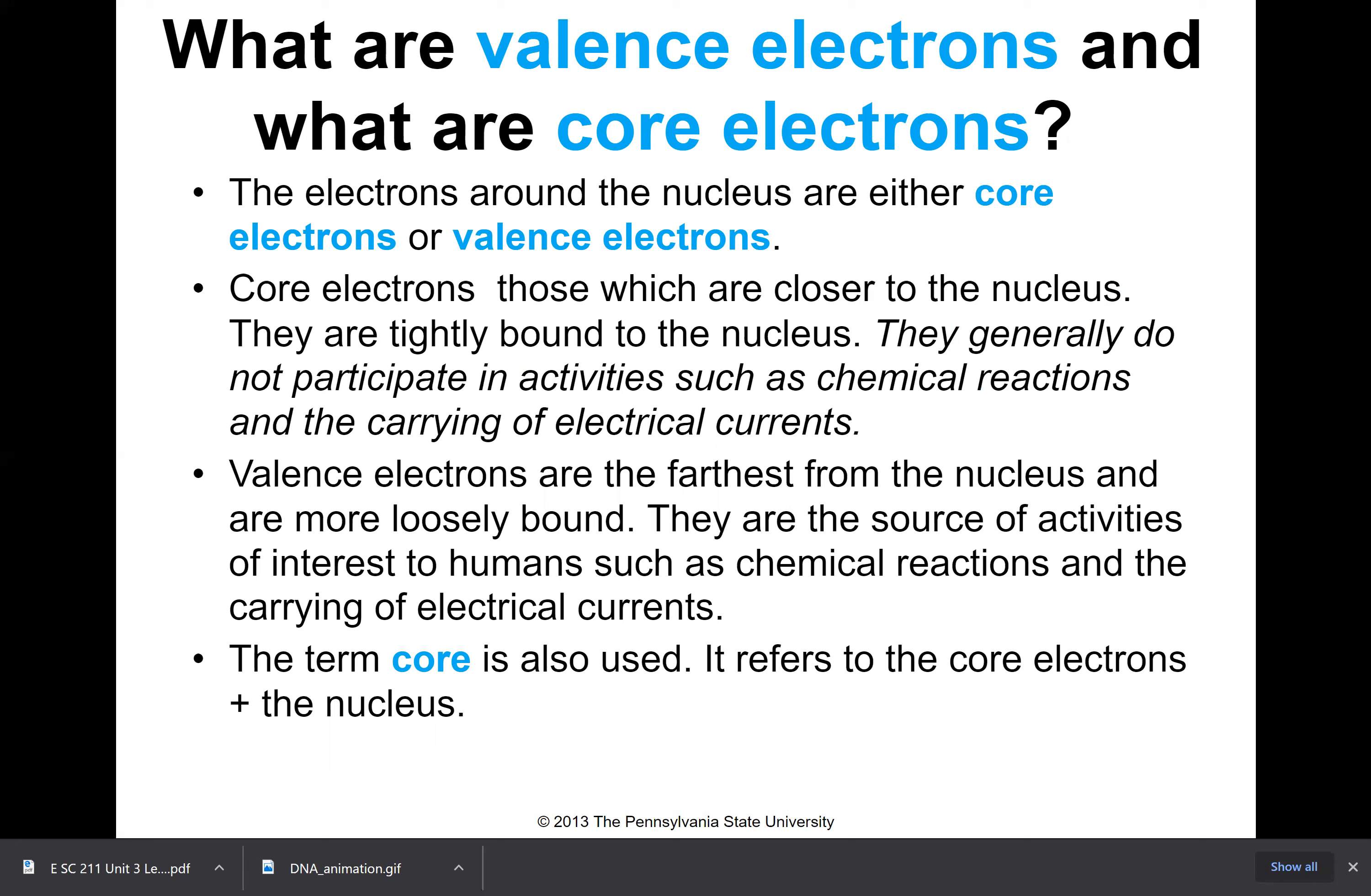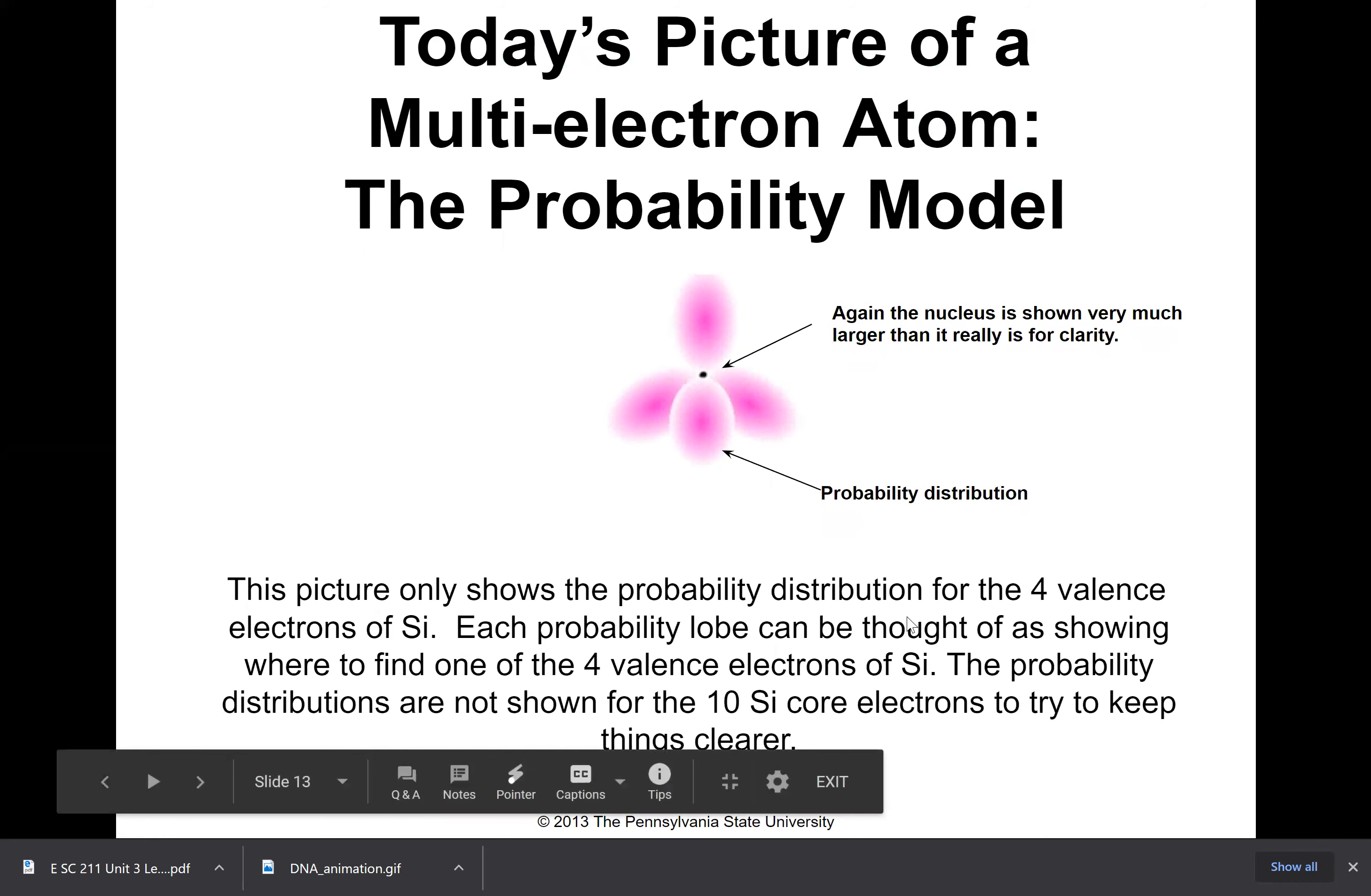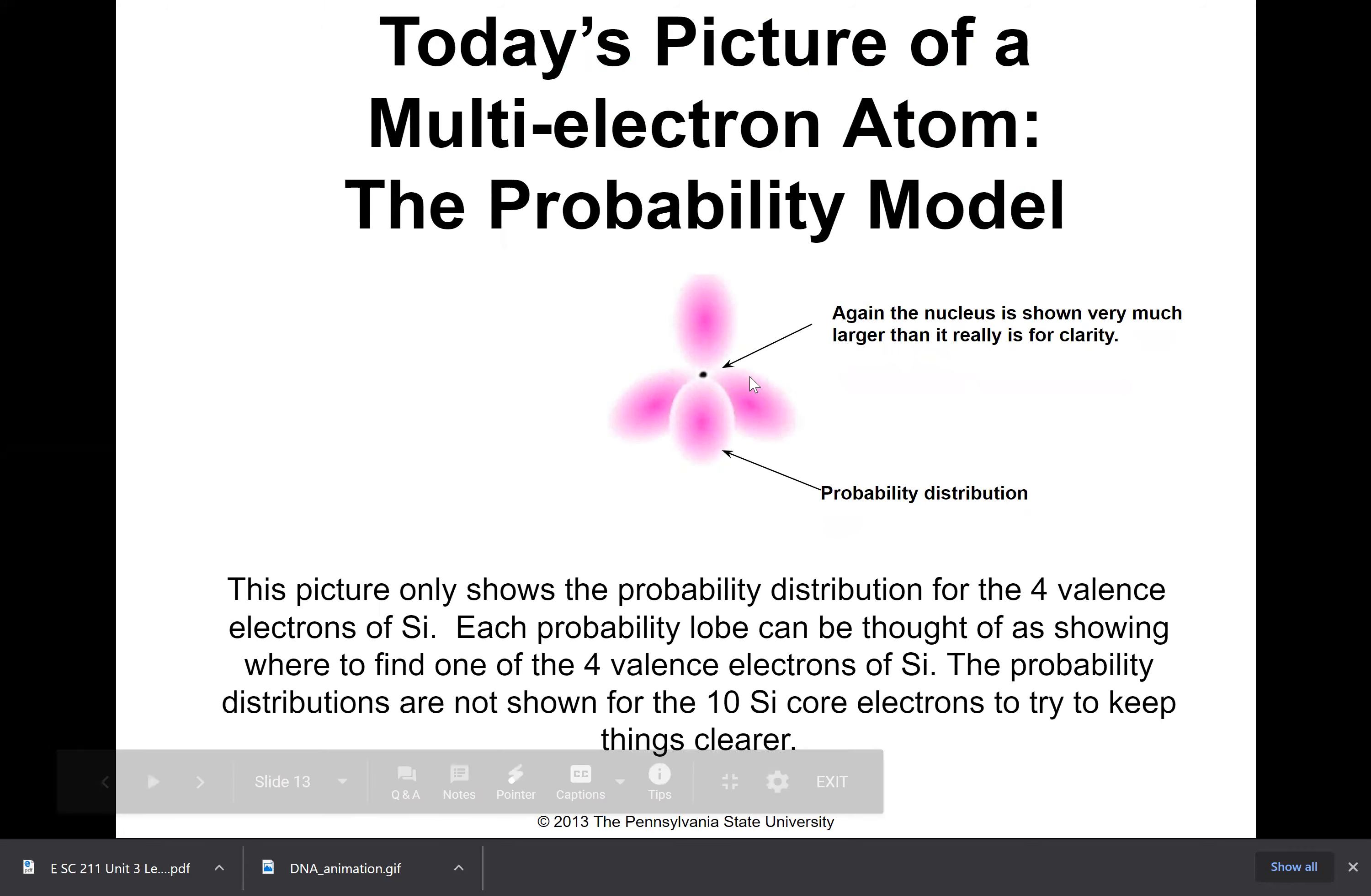Valence electrons are the electrons farthest from the nucleus and are most loosely bound. They are the source of activities of interest such as chemical reactions and carrying of electrical currents. The term core is also used to refer to the core electrons plus the nucleus—sometimes it's called the kernel also. So you have core electrons and the nucleus which are just kind of there, and the valence electrons which are the electrons that really give the atom most of its properties.